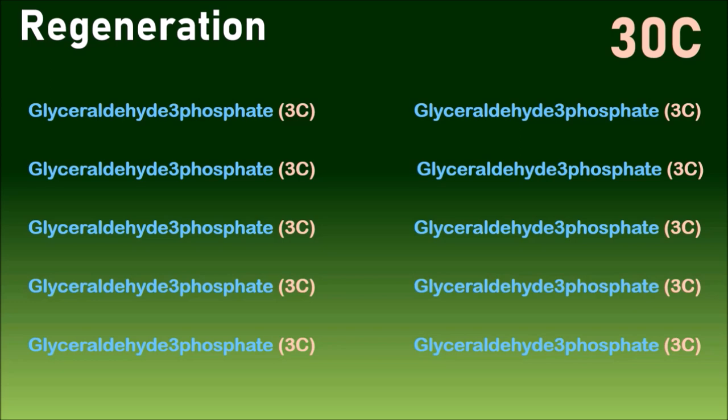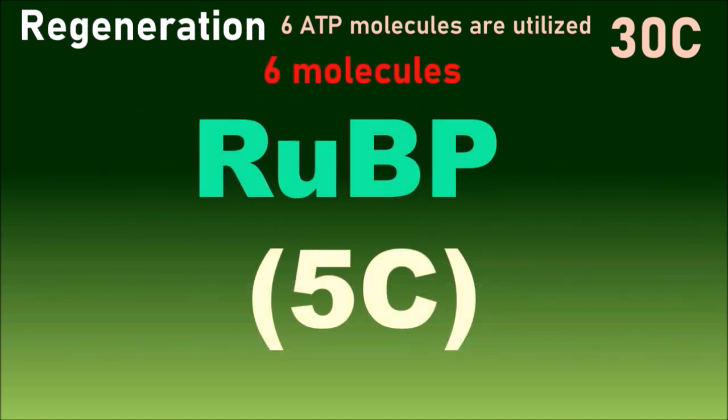Regeneration: The remaining 10 molecules of glyceraldehyde 3-phosphate which make about 30 carbon atoms will be involved in the regeneration process of RuBP by utilizing six ATP molecules. In the process, finally six molecules of RuBP are formed, and these will be made available for the next cycle to occur.